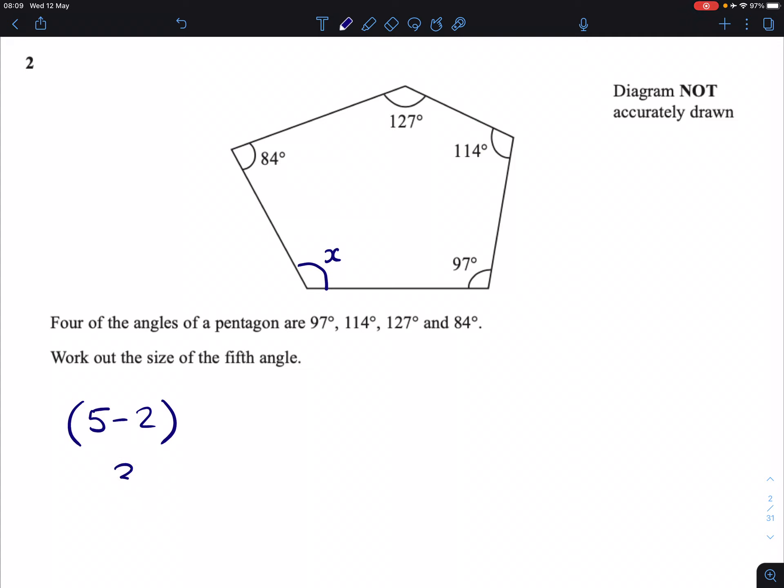That comes about when we do 5 minus 2, we get 3. And because there's 180 degrees in each triangle, that's how many 180s we multiply by. What we'll get from that is 540 degrees. So all of the angles inside add up to 540 degrees.